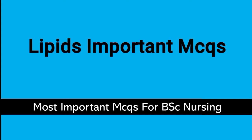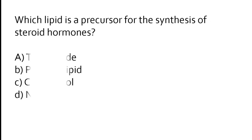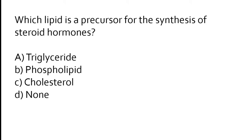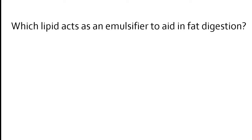Welcome to our new video. In this video we will cover lipids important MCQs. Which lipid is a precursor for the synthesis of steroid hormones? Triglyceride, phospholipid, cholesterol, or none? The correct answer is option C: cholesterol is a precursor for the synthesis of steroid hormones.